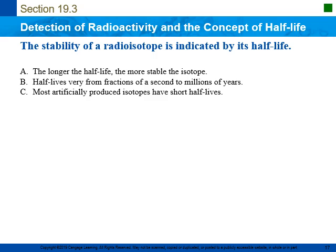The stability of a radioisotope is indicated by its half-life. The longer the half-life, the more stable the isotope. Half-lives can vary from fractions of a second to billions of years. Most artificially produced isotopes have a very short half-life. When we talk about artificially produced isotopes, we're typically referring to atomic numbers above 92. Uranium, element 92, is the last naturally occurring isotope. Natural transmutations occur for radioactive particles decaying below atomic number 92, while artificial transmutations are for elements above atomic number 92.